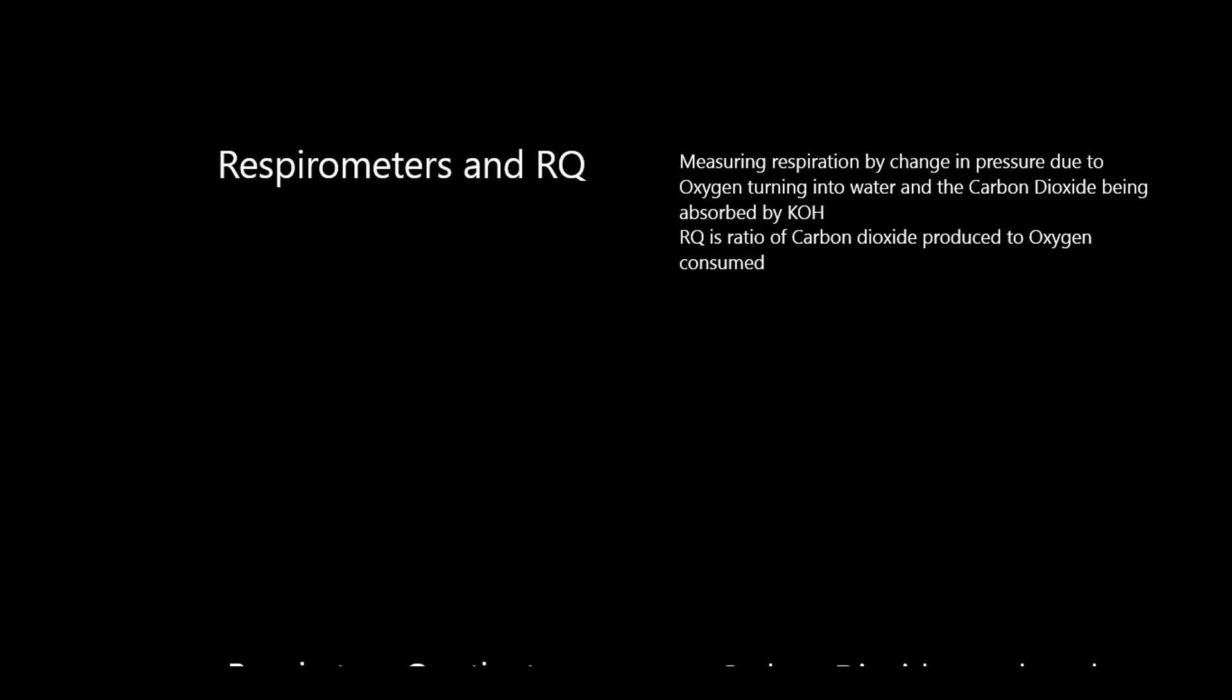A respirometer is a piece of apparatus that you use to measure the rate of respiration of an organism. The way it works is that because the oxygen is turned into water and the carbon dioxide that you produce is absorbed by potassium hydroxide, then any change in volume of the vessel is going to be due to the absorption of oxygen.